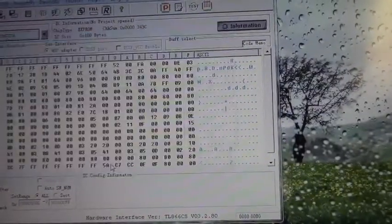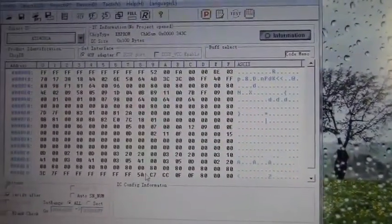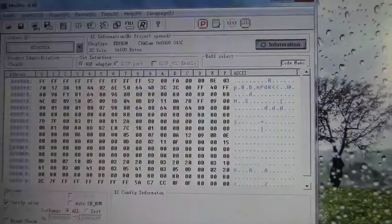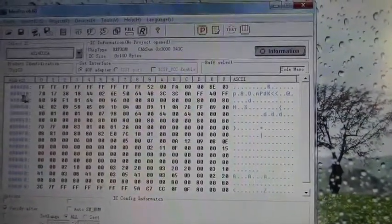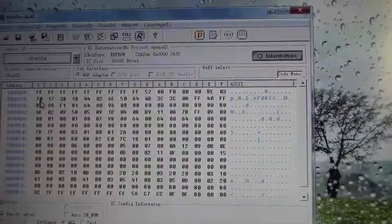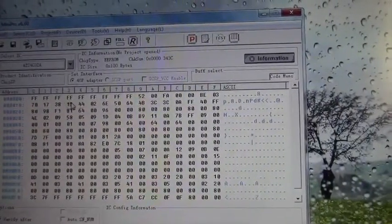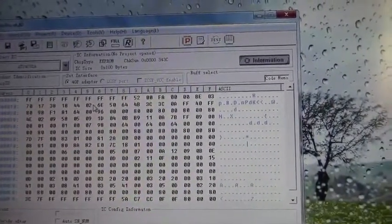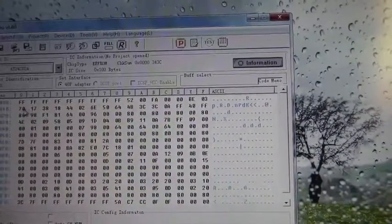It said read finished. So just cancel out of that. Now, this is the content of the EEPROM. And right here at hex address 10, this is 10, 11, 12, 13, 14, 15. These are the numbers that we need to change.